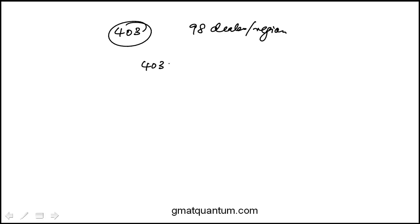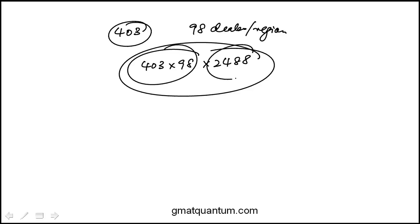So that means there are 403 times 98 dealers. That's the total number of dealers. And each dealer sold on average 2488 pairs. The question is, what's the total number of shoes sold? So that would be number of dealers times the average number of shoes sold by each dealer.